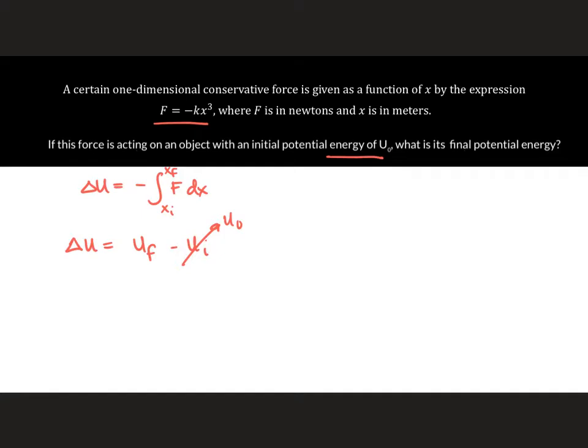Therefore, U final is just equal to delta U plus U₀, and our delta U once again is just the negative of the integral of F dx plus U₀.